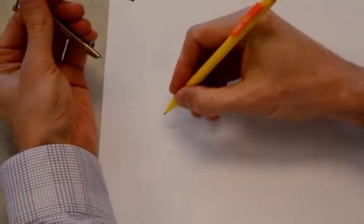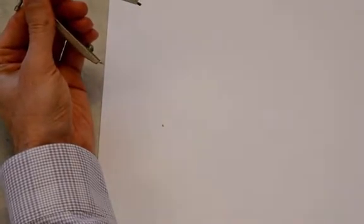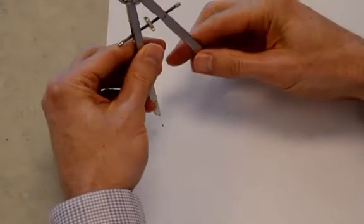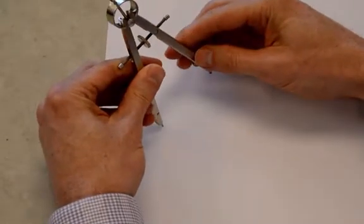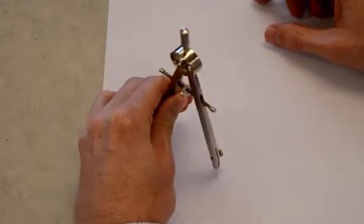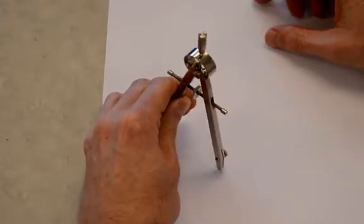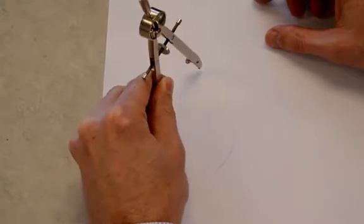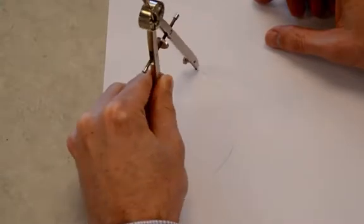So you're going to start with a rhombus. I'm going to make one vertex just by drawing a point. Then, I'm going to use my compass to make two marks, one up here, one down here. Kind of like that.